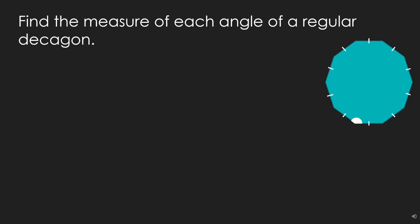This problem asks us to determine the measure of each angle of a regular decagon. A regular decagon is a polygon having equal sides. That is why, in the illustration, you can see a line in each side as a symbol that each side has equal length.